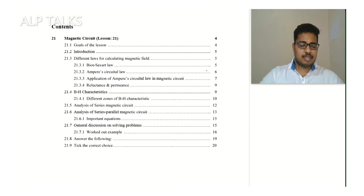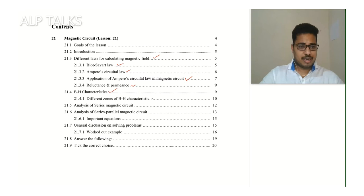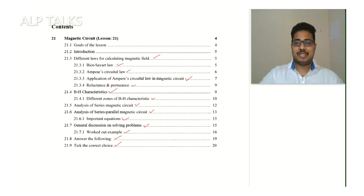Here are the contents: magnetic circuit, goals of the lesson, introduction, different laws for calculating magnetic field — Biot-Savart law, Ampere's circuit law, application of Ampere's circuit law in magnetic circuit, reluctance and permeance, BH characteristics, different zones of BH characteristics, analysis of series magnetic circuit, analysis of series and parallel magnetic circuit, some important equations, general discussion on solving problems, worked out examples, and practice questions.